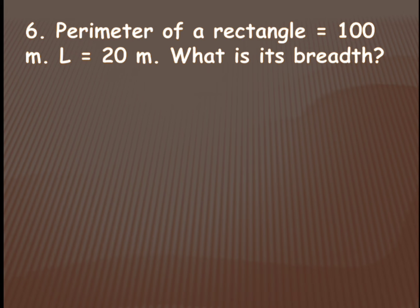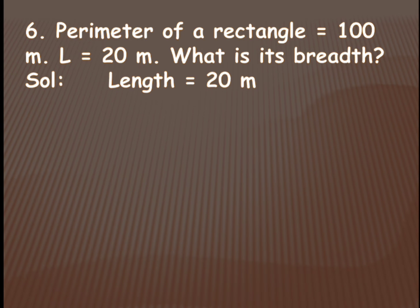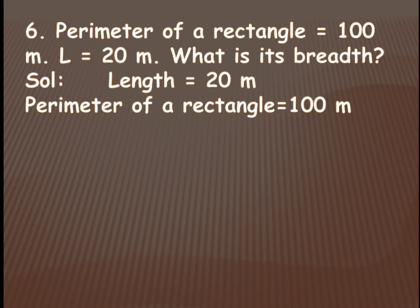Next problem: the perimeter of a rectangle is 100 meters and the length is 20 meters — what is its breadth? Here the perimeter and length are given, and we need to find the breadth. Sometimes they give the perimeter and breadth and you find the length; both use the same procedure. Perimeter of a rectangle equals 100 meters and length equals 20 meters.